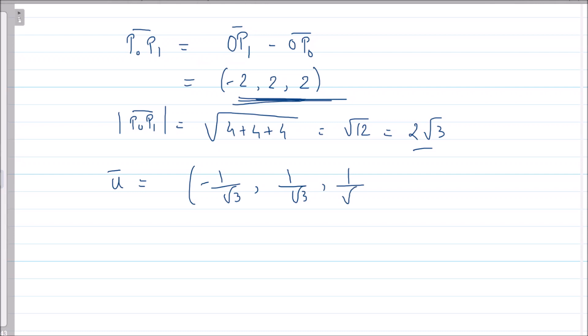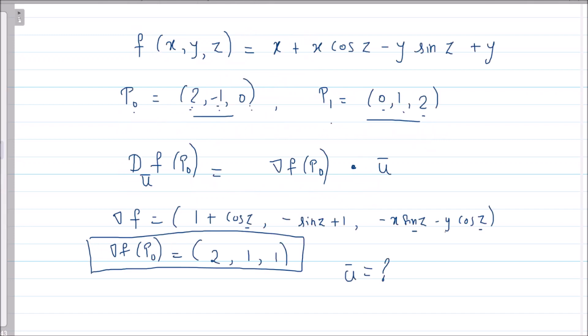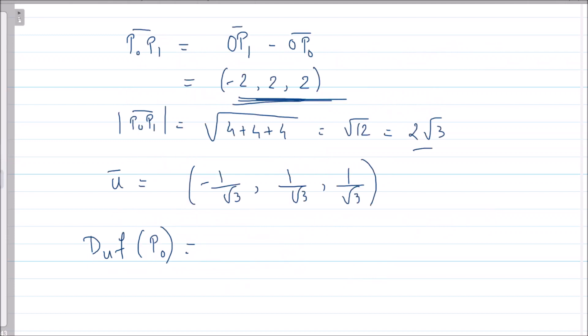Therefore the directional derivative of f at point P₀ in the direction u is given by the dot product. What is grad f? (2, 1, 1). So 2 into -1/√3 plus 1 into 1/√3—that is -2/√3 plus 1/√3 plus 1/√3. So here you can see the answer is 0.